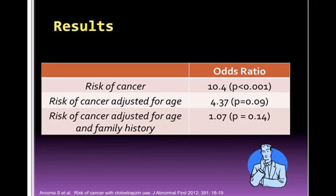While this result is statistically significant, it is important to interpret the odds ratio based upon the comparison used. Taking a closer look at the results reveals that the initial odds ratio did not include the effects of age or other confounders such as a family history of cancer. When the odds ratio was adjusted for age, it decreased to 4.37 and was no longer statistically significant. When the confounder of family history of cancer was also included, the odds ratio decreased further to 1.07. The authors concluded that clodostrapsin is associated with an increased risk of cancer and recommended against using this medication.